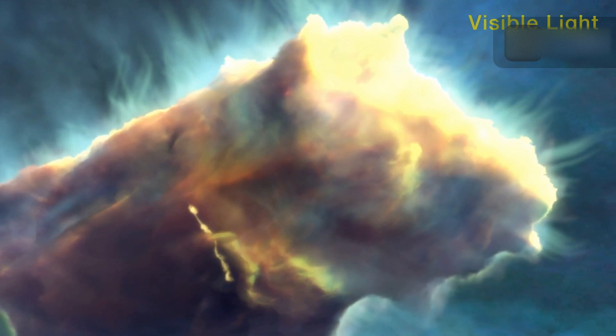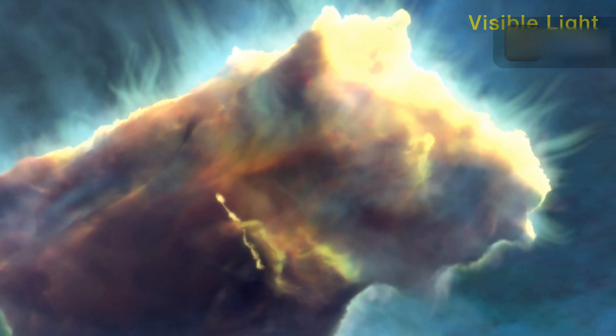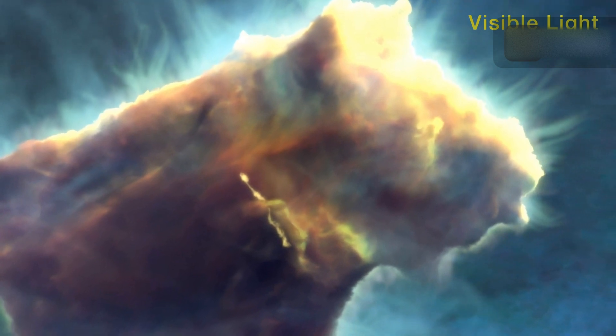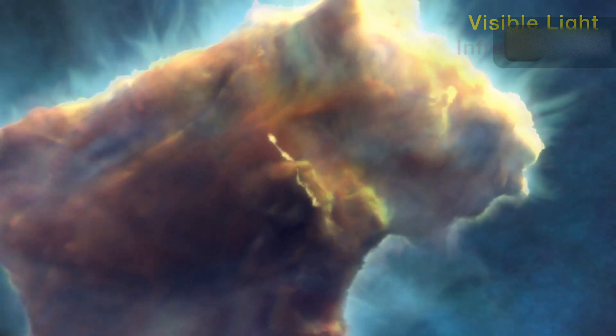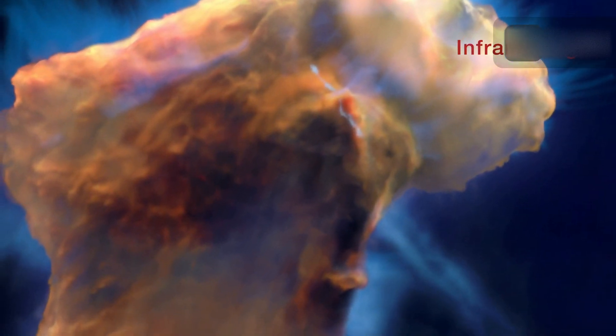A newborn star is releasing a diagonal jet of material toward the top of the left pillar. Near the top of the left column, an oblique jet of material is emitted from a newborn star, but observers cannot see the star itself.